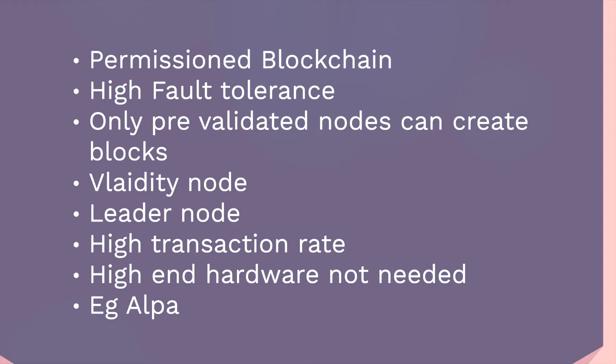Proof of Authority improves high transaction rates and does not require high-end hardware, as was required in Proof of Elapsed Time. An example of a blockchain platform that uses it is Alpha — Alpha is one of the blockchain platforms which uses Proof of Authority.